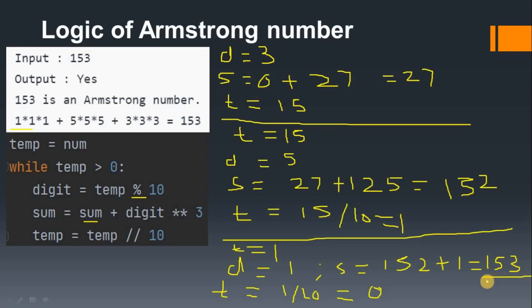That is what makes 153 an Armstrong number. I hope you understood this logic. Now we will go into PyCharm and see how to write the program step by step in Python.